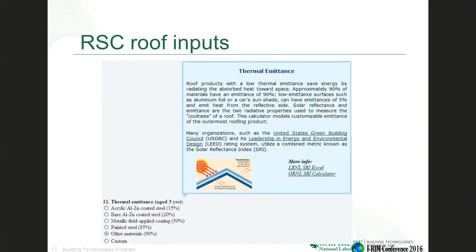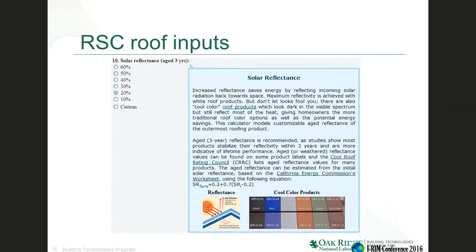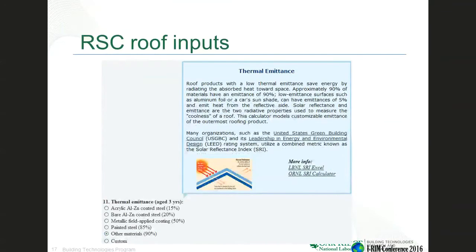The outside roof layer not only has a reflectance — how much of the sun gets reflected — but also a thermal emittance. As it heats up, it emits long-wave radiation. Over 90% of materials have an emittance of 90%. But if you have a metal roof or a specially coated roof, you can get a lower emittance, which is actually a little more energy efficient. These questions are always ordered from least energy efficient at the bottom to most energy efficient at the top, so you can generally find what is a more energy efficient option for each question.